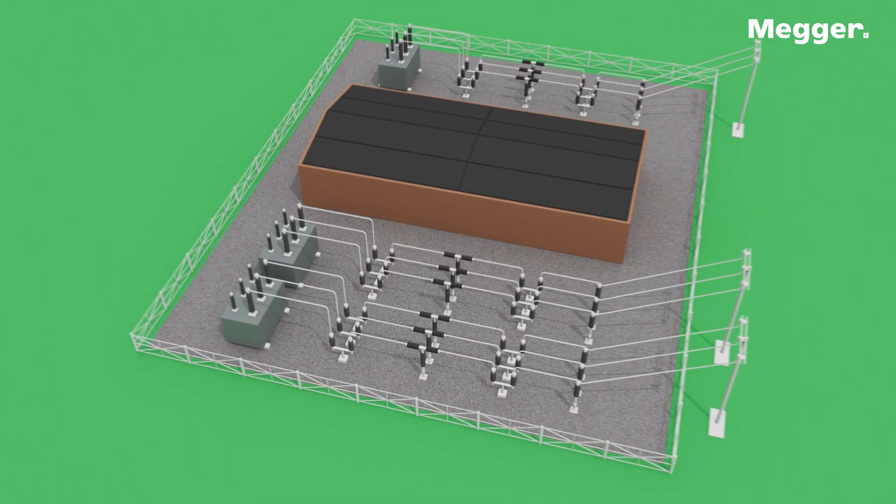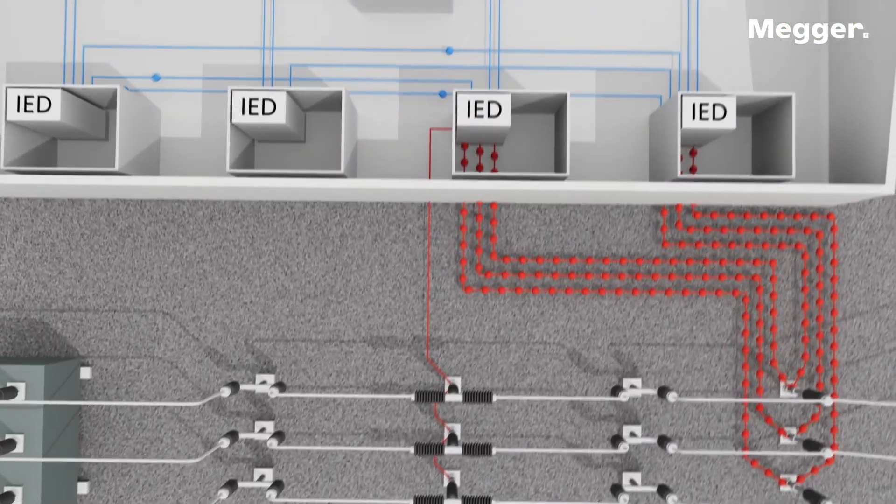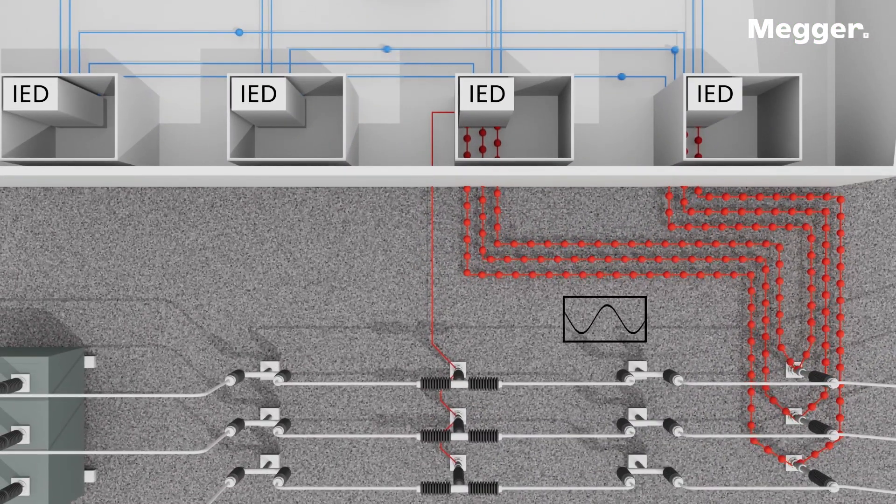In the substation, the connections between IEDs have been a proprietary one-to-one connection through wires, and the same goes for the power network sensors.